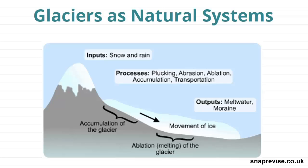As we learnt in the first video, a system is an assemblage of interrelated parts that work together by ways of some driving processes. In this video we are going to look at glacial systems to understand how, when and where glaciers and ice sheets form and their effects on the landscape.